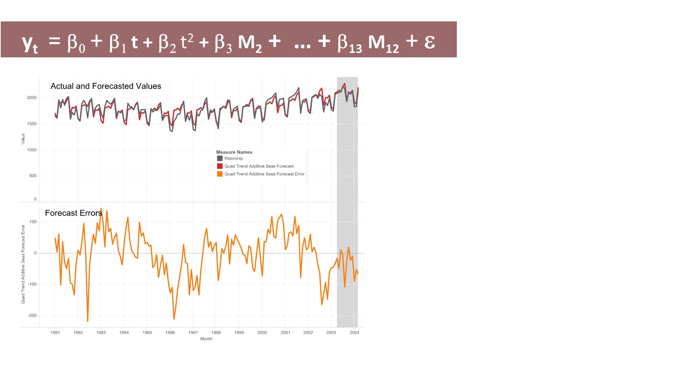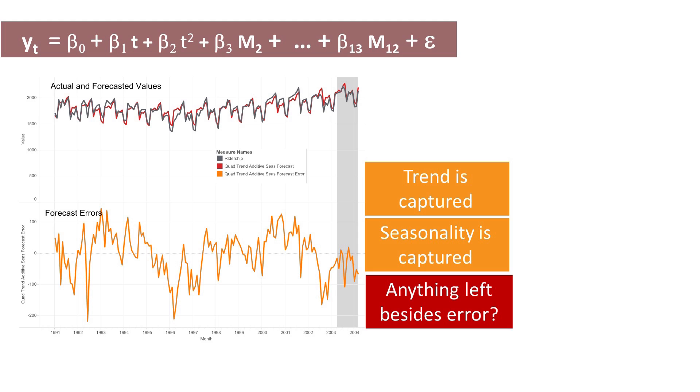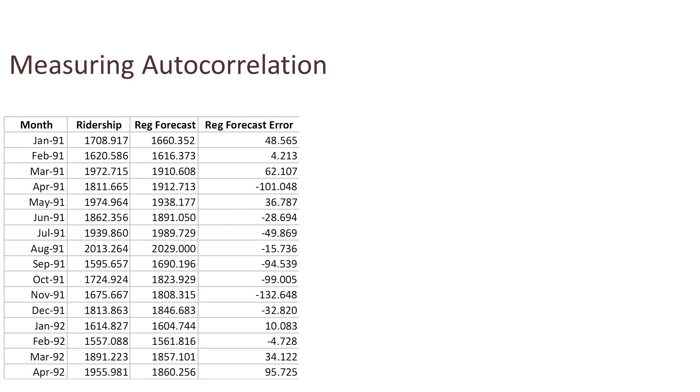Looking at the performance charts, we concluded that this model reasonably captured the trend and the seasonality. But do you see any other pattern remaining in the series of forecast errors? Let's find out whether the residual series contains autocorrelation.